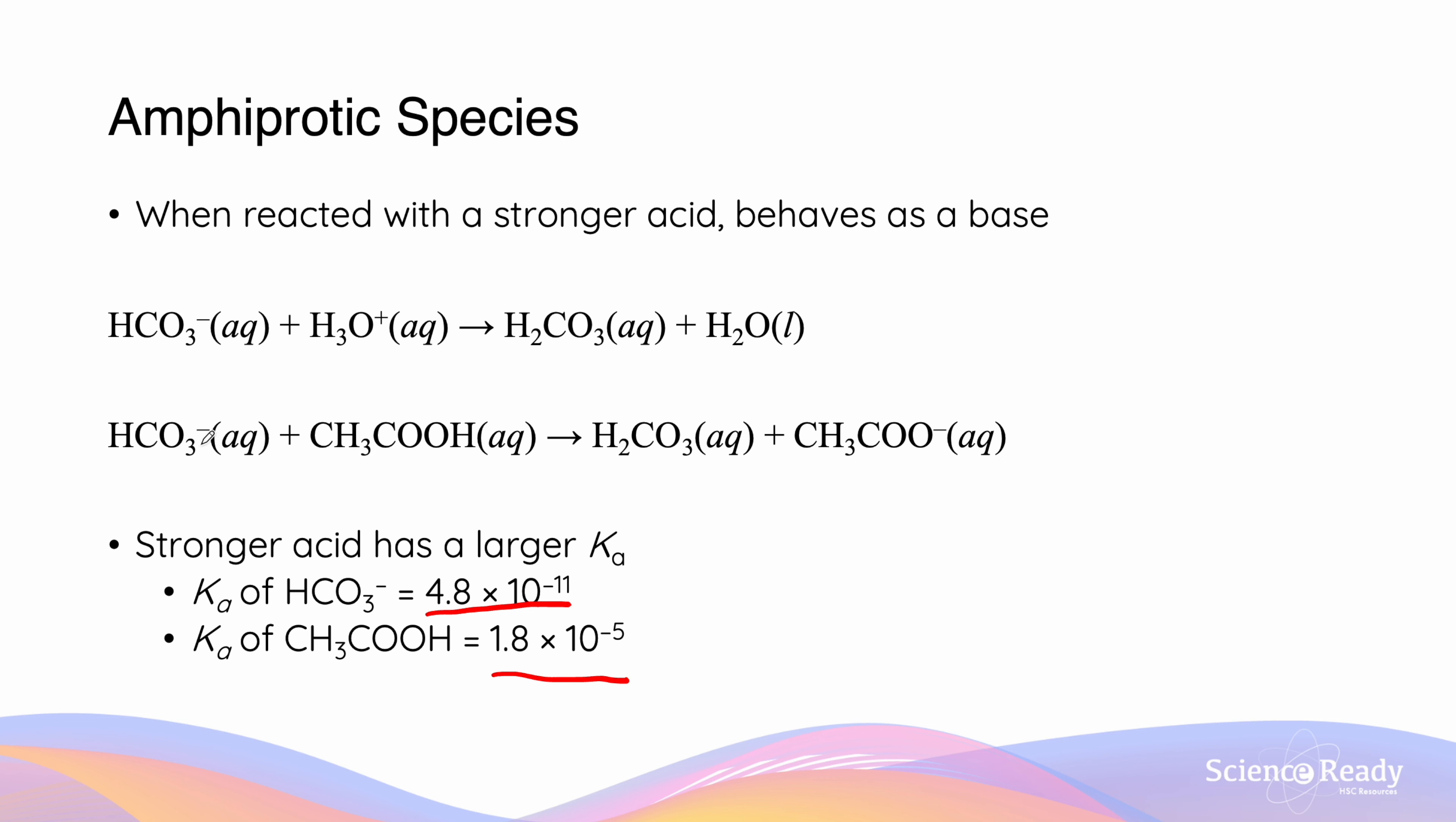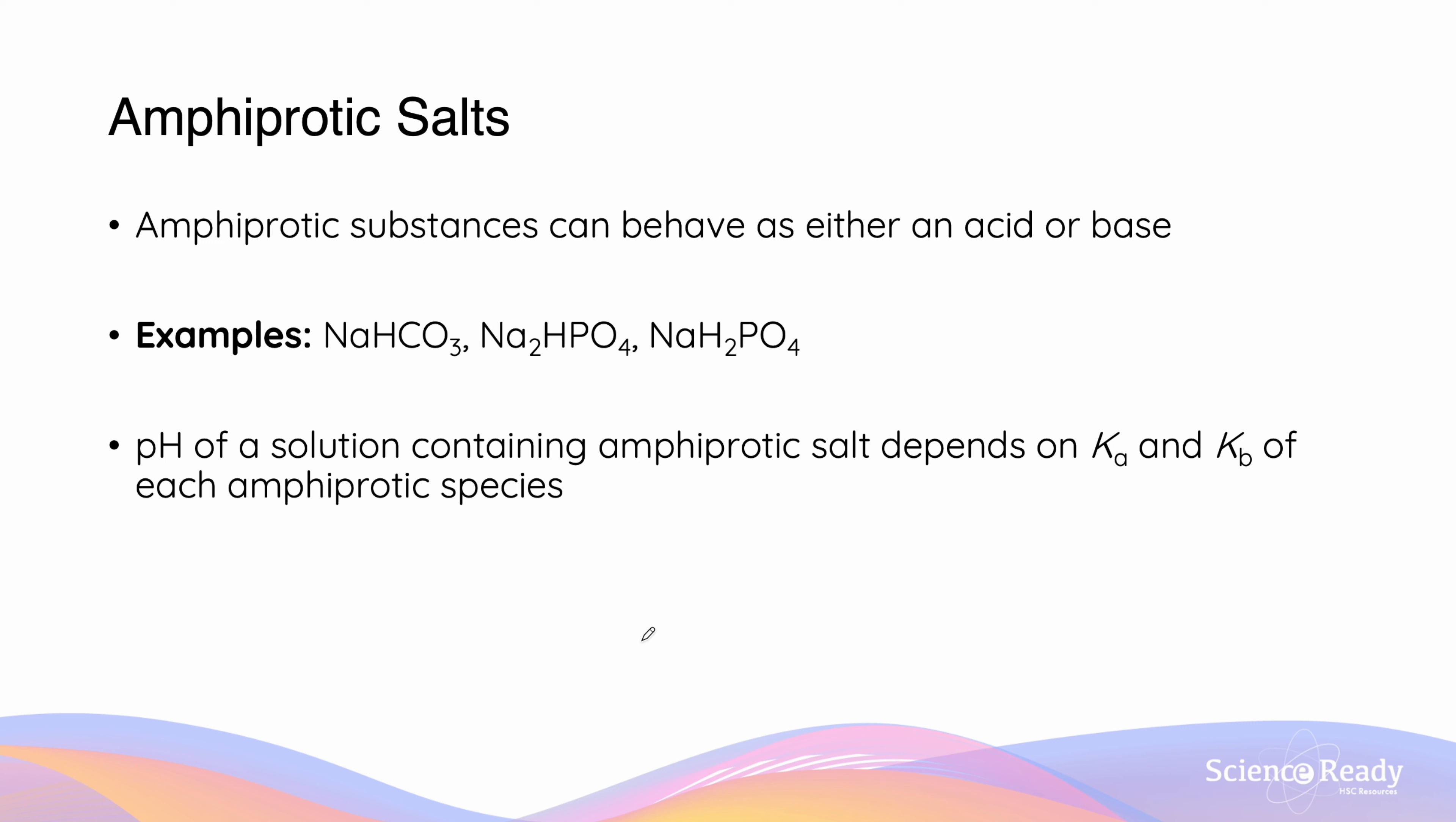Thus, when we look at the reaction between these two species, the one that will act as an acid is going to be acetic acid, which will donate its proton to form the carbonic acid and the acetate ion. Amphiprotic salts are ionic substances which dissociate in water to form an amphiprotic substance.